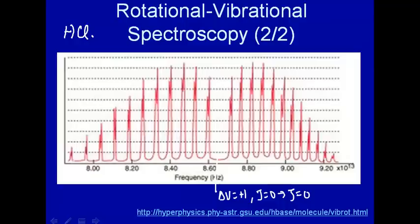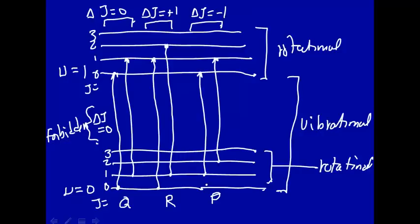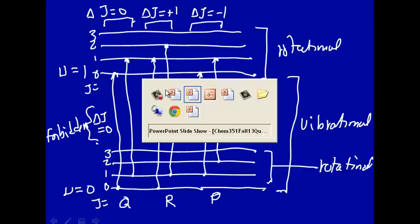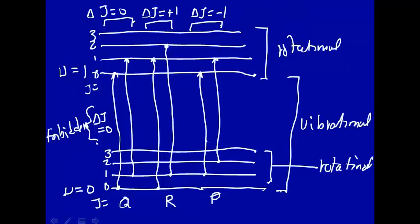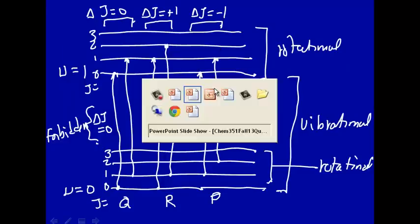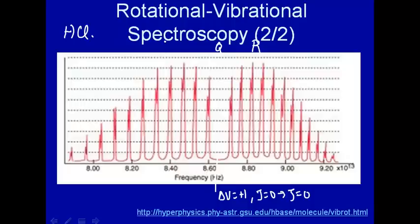To the right and left of that, what you have are the differences in rotational energy levels. Let's see if we can figure this out. It looks like, as you go here to here, this would be the R branch. Those are higher energy. The Q would be right in the middle, but we don't see a branch there, because that's forbidden. And then these are lower energies, since Δj changes by minus one. So this would be the P branch.